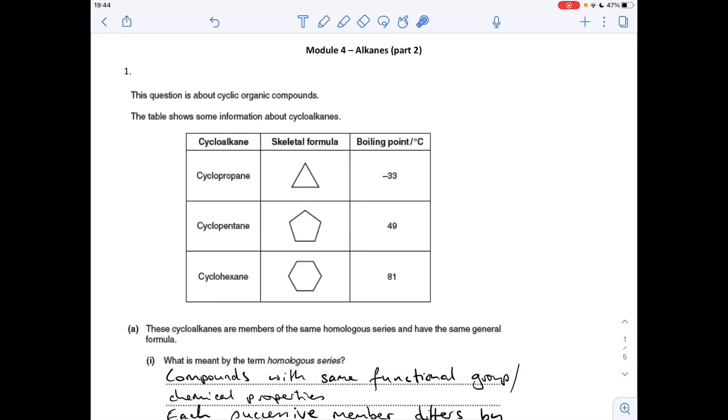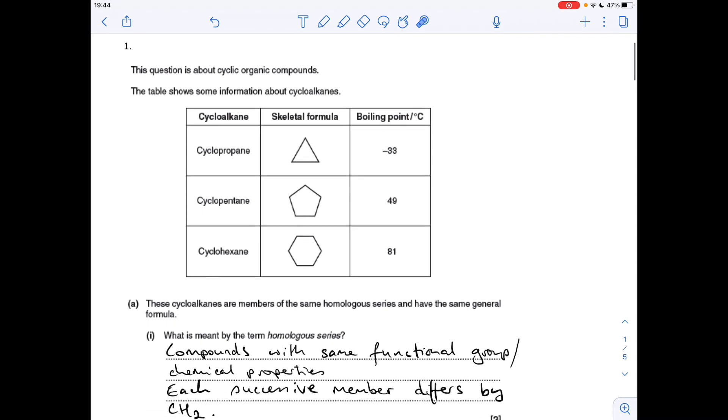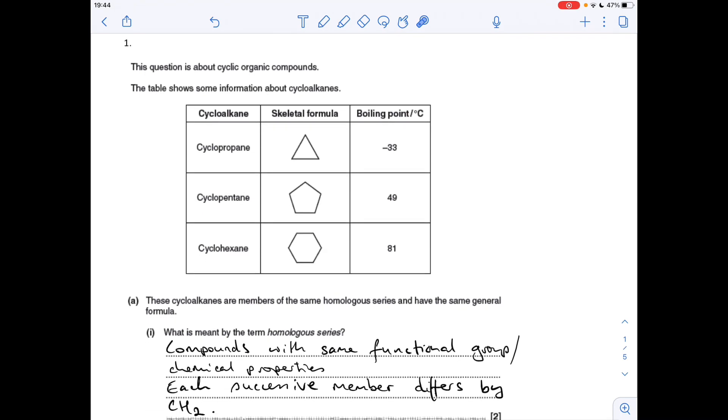Question one's about the cycloalkanes, so we've got a table of three cycloalkanes with the name, the skeletal formula, and the boiling point. First question: what's meant by the term homologous series? So the definition is compounds with the same functional group or same chemical properties, but each successive member differs by CH2.